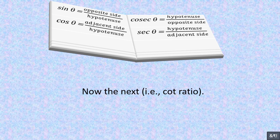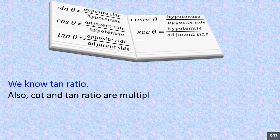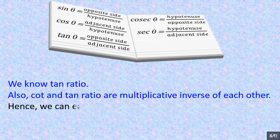For the cot ratio: since tan θ = opposite / adjacent, and cot and tan are multiplicative inverses of each other, we can easily write: cot θ = adjacent side / opposite side.